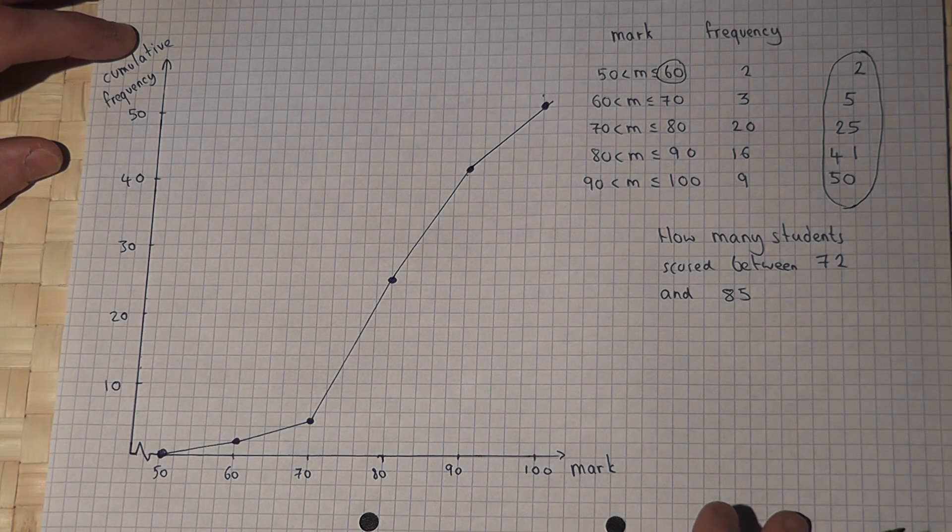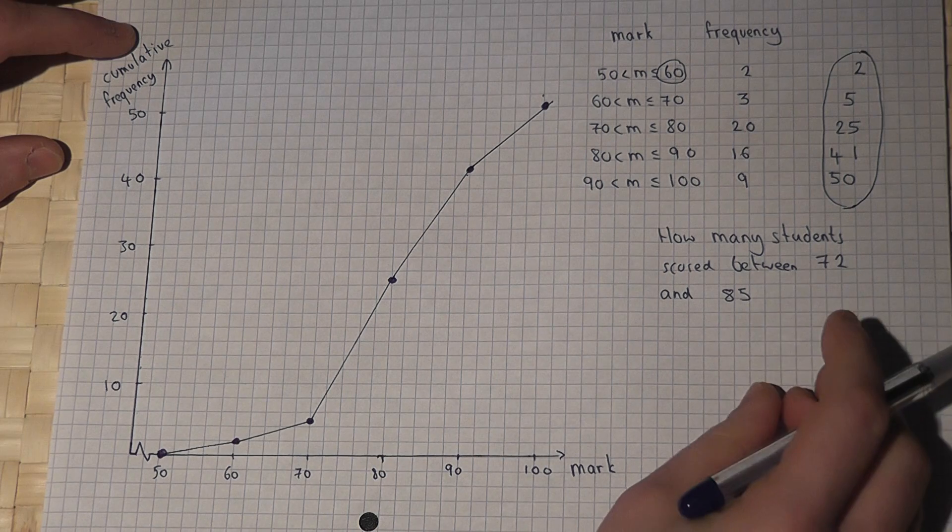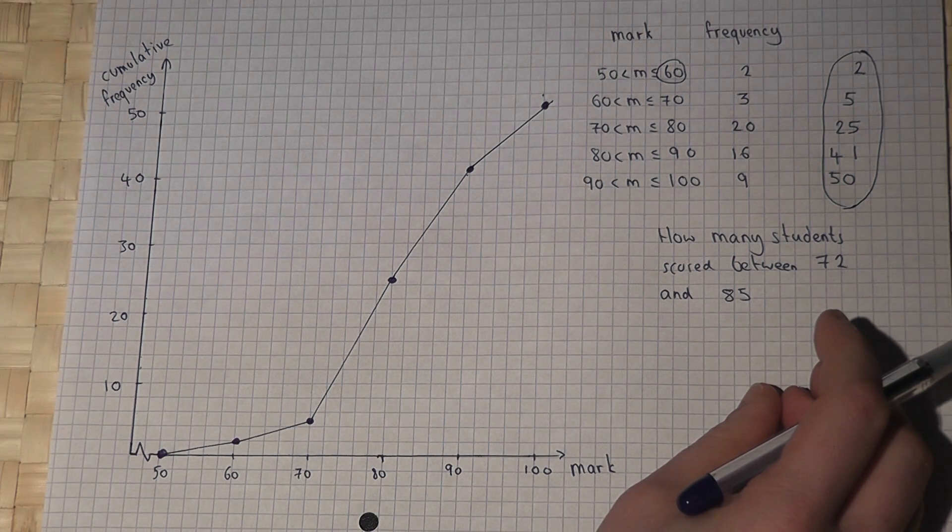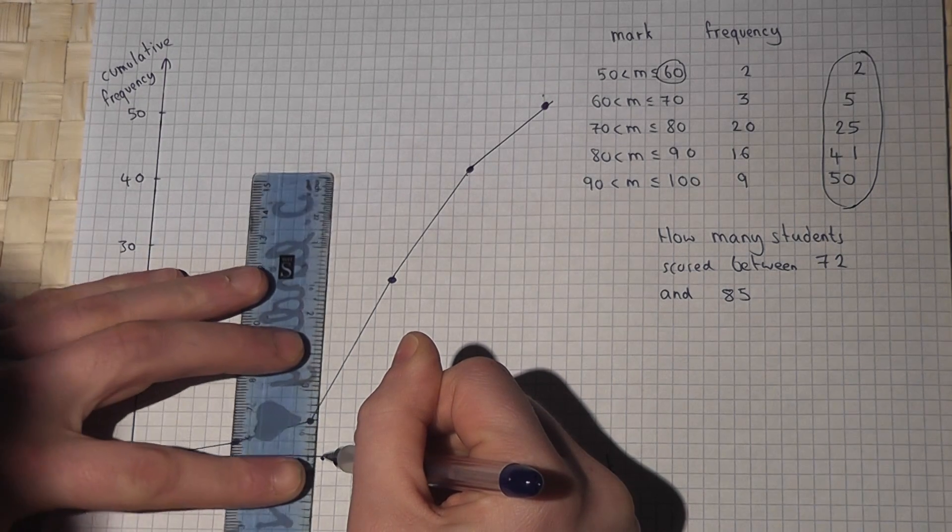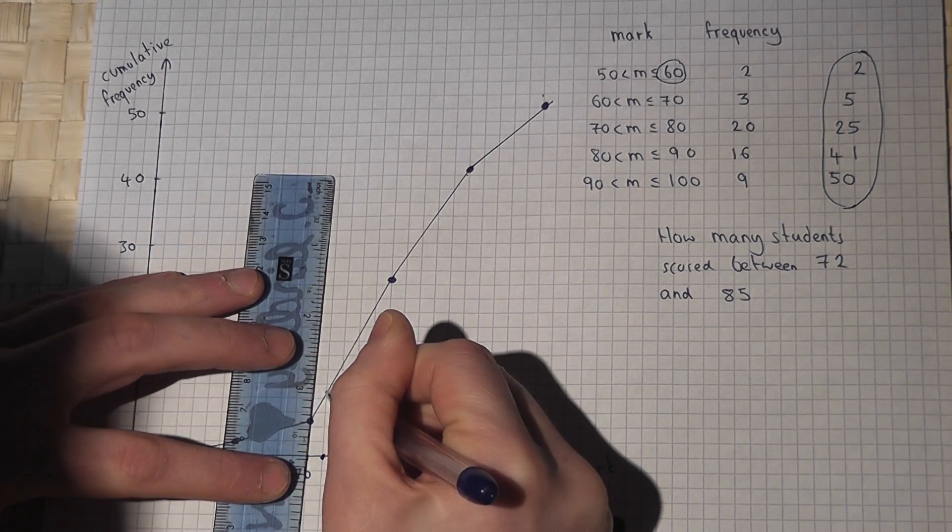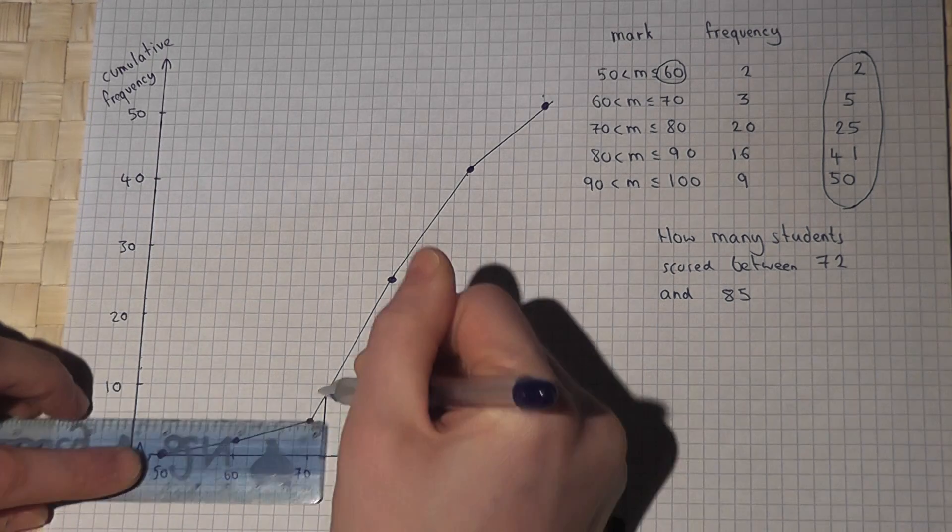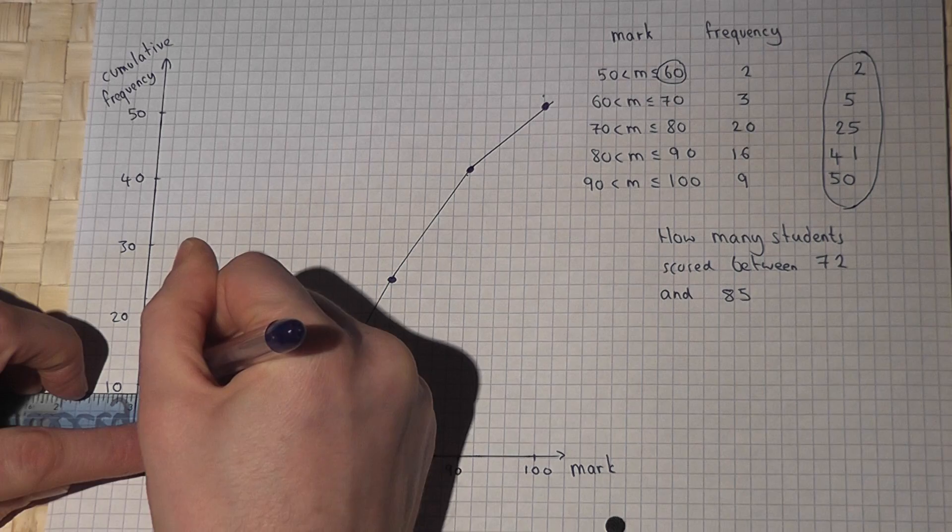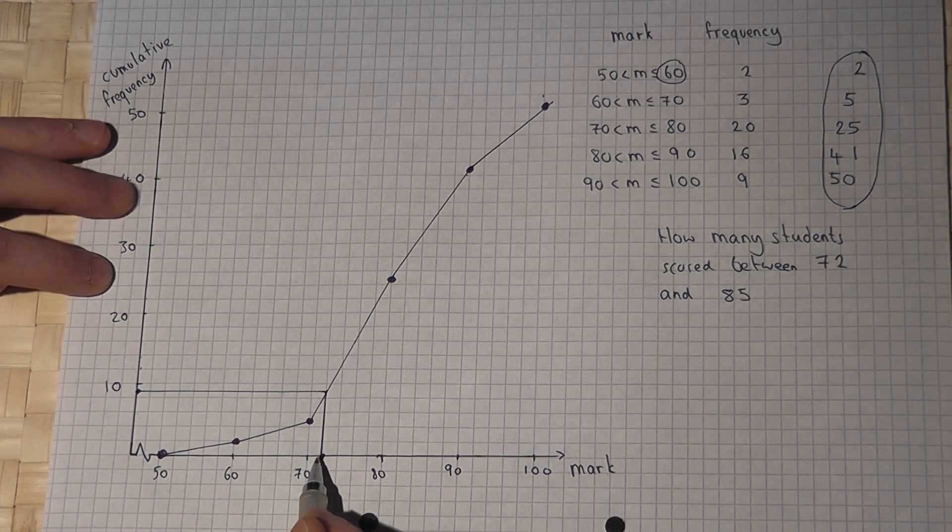Now the question asks how many students scored between 72 and 85. Now to do this we'll find out where 72 is on the x-axis and draw a line up to the y scale. And this graph shows us therefore that there were 9 students who scored less than 72.